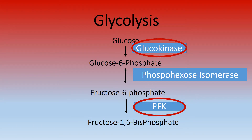Glycolysis: here are the initial steps of glycolysis. Glucokinase enzyme, which is found in the liver, and phosphofructokinase are insulin-dependent enzymes. The reactions they catalyze are the rate-limiting steps of glycolysis. But their activity is reduced as the insulin to glucagon ratio is decreased. Glucagon inhibits both enzymes, so the rate of glycolysis is reduced.